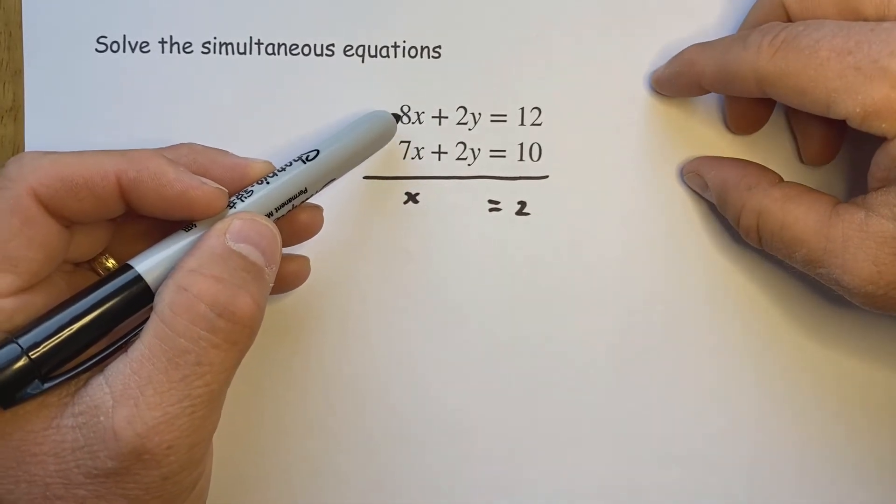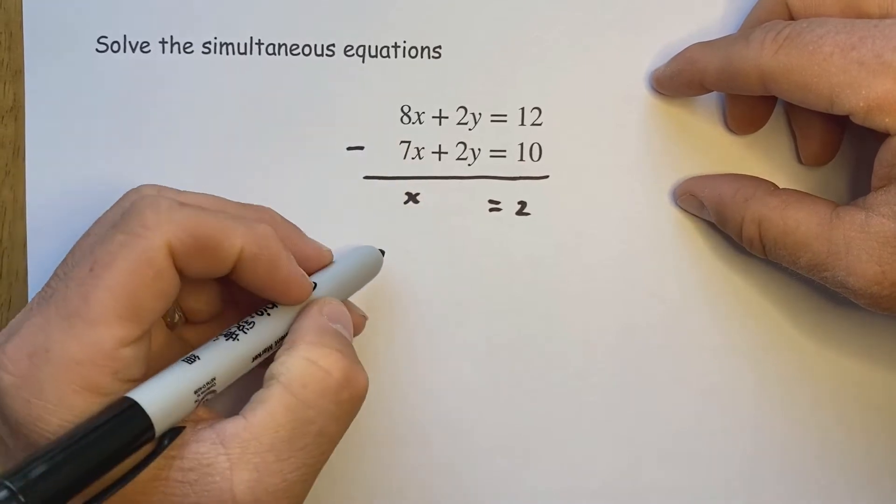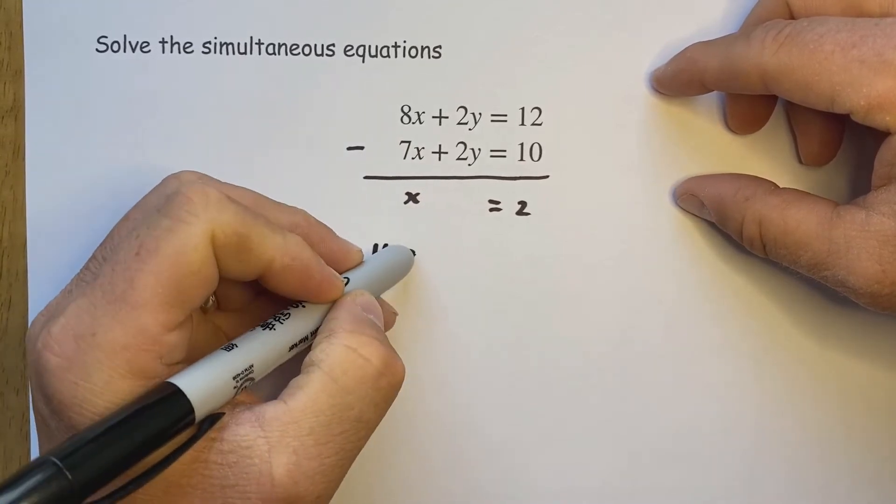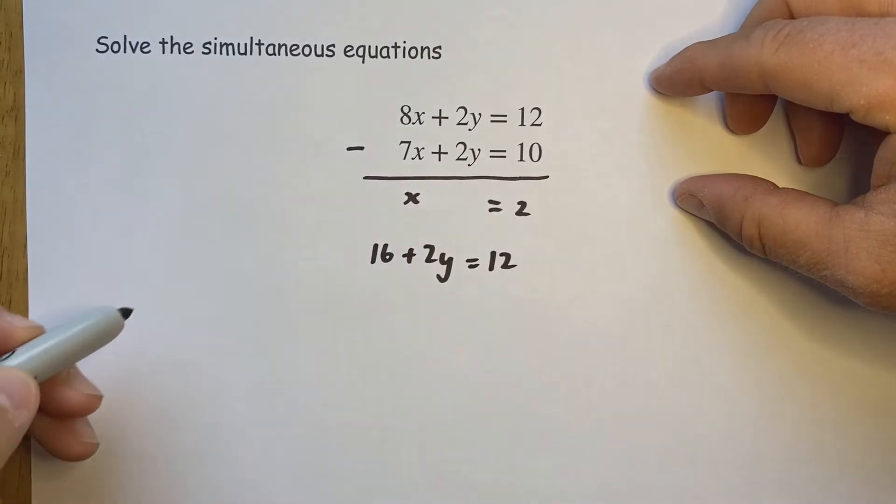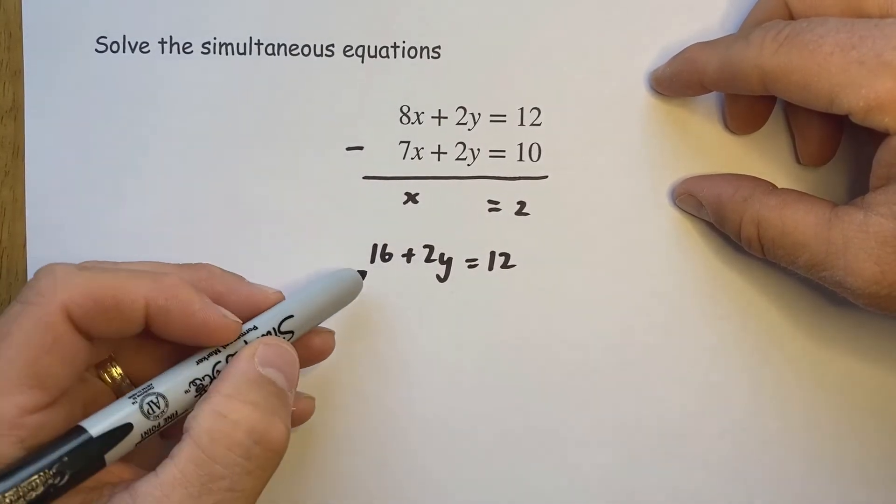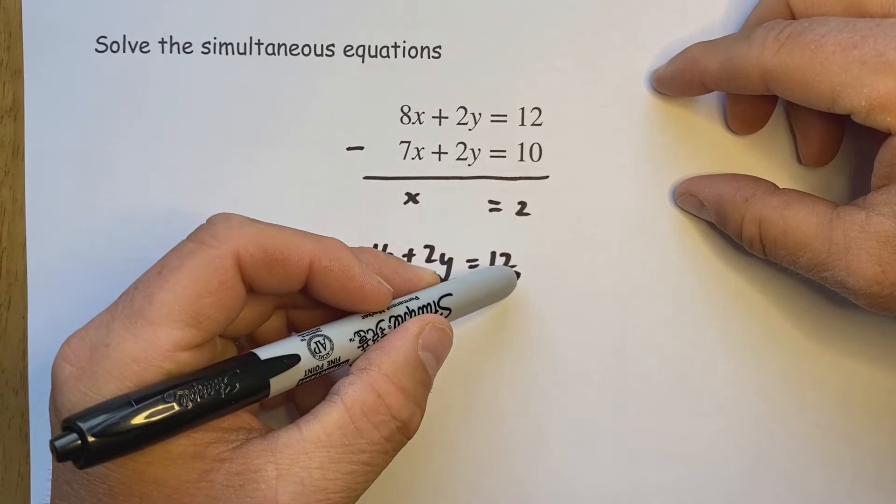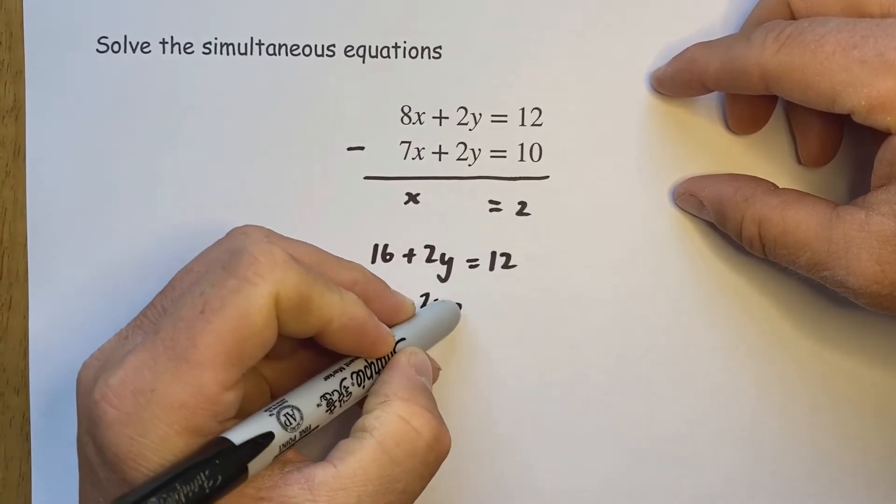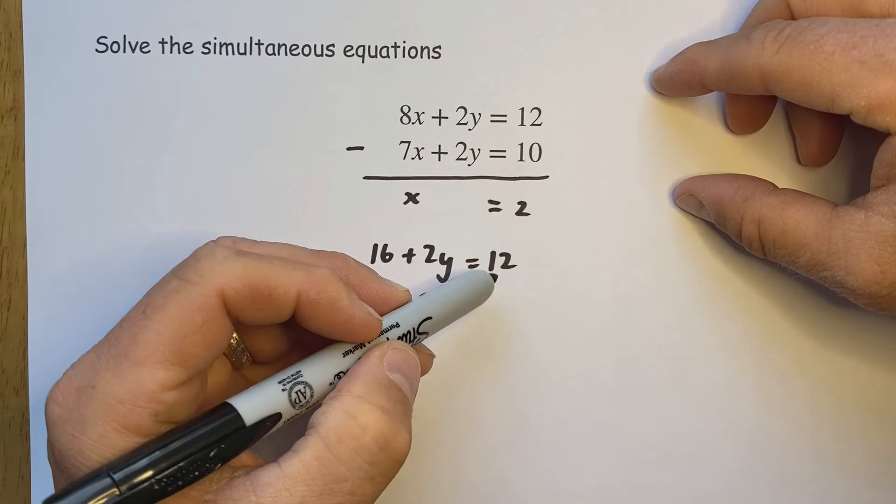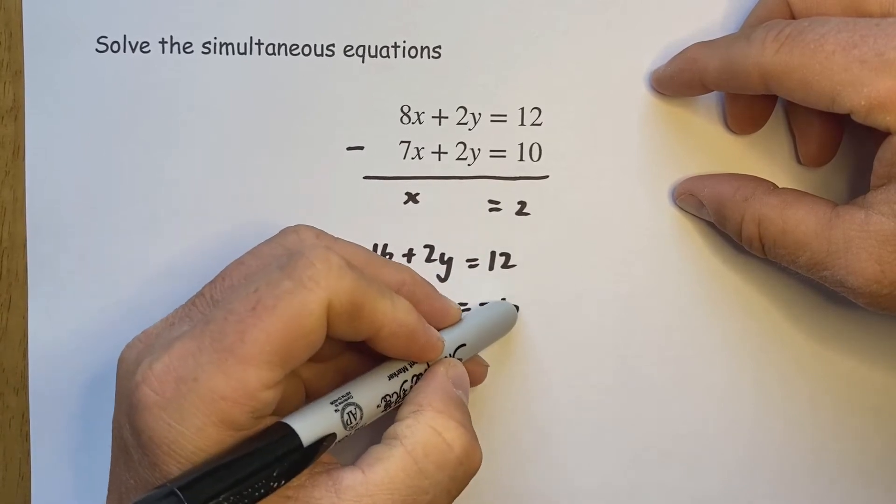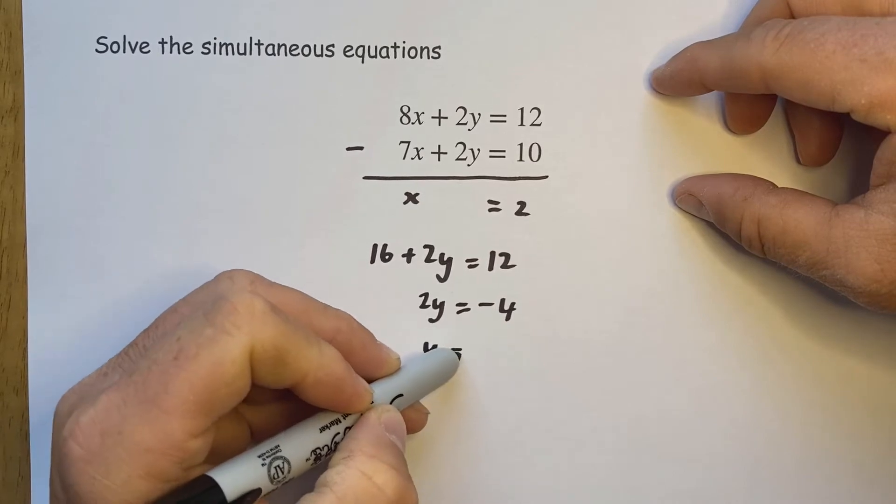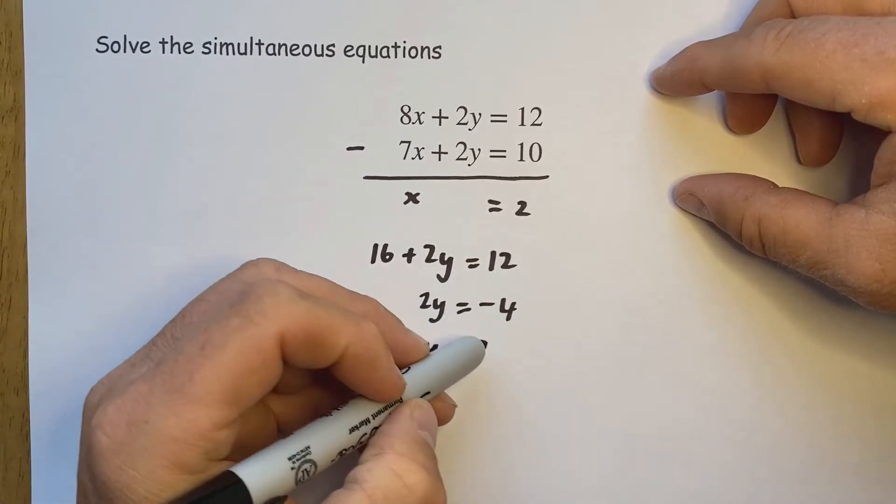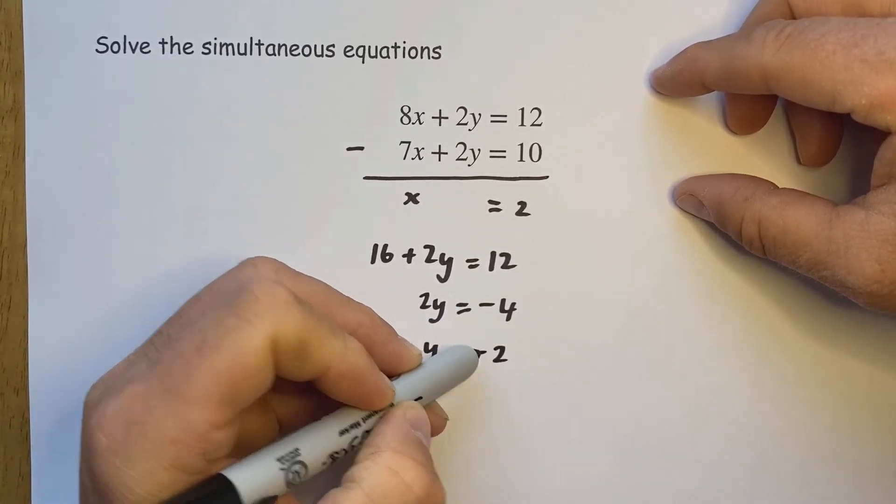With x equal to 2, put that into the first equation. We have 8 times 2, we have 16, add the 2y is equal to 12. Now if I take the 16 across to the other side it becomes a take 16, so we have 2y equals 12 take 16, minus 4. And as with the previous work, 2 goes into 4 twice but we have a minus so it's minus 2.